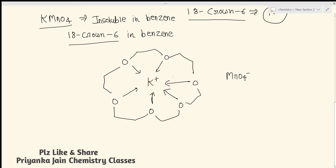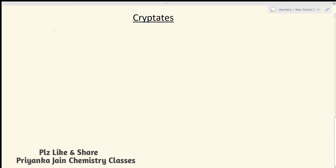In this way, the K⁺ goes into the 18-crown-6 cavity and MnO₄⁻ remains outside, allowing KMnO₄ to dissolve in benzene. So any inorganic substance containing alkali metals can be easily dissolved in organic solvents by using crown ethers. The key property is the specific hole size — the selectivity of the cavity determines which ion will accommodate in it.